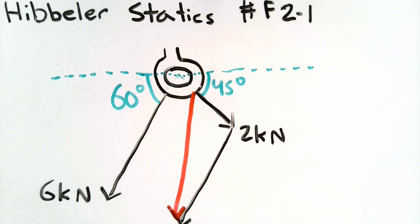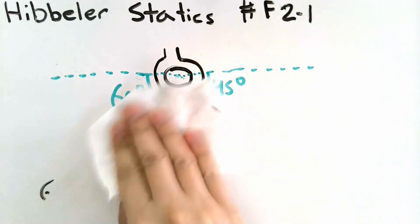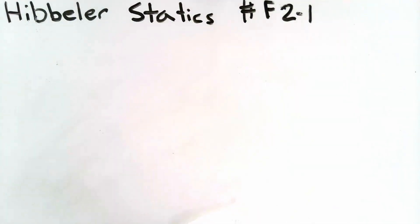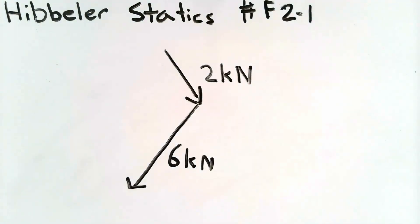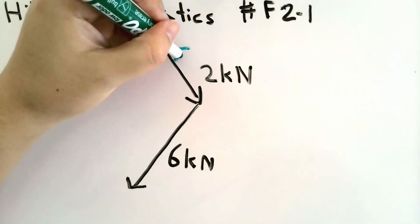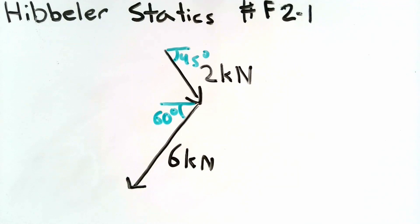And this should be our resultant force. Now the drawing is not very much to scale here so I'm going to try to draw only my vectors. So in this problem I start off with my 2 kilonewton vectors and then to it I add on 6 kilonewton units. We cannot forget about their directions.